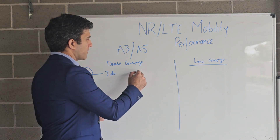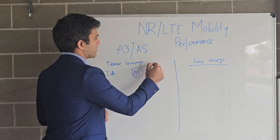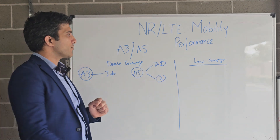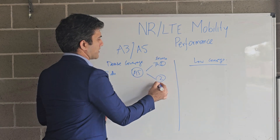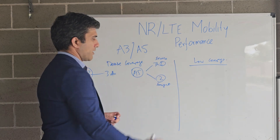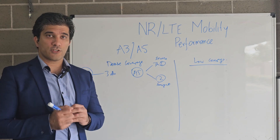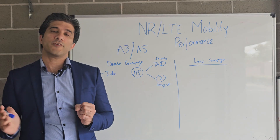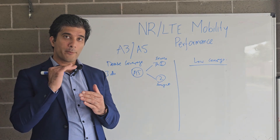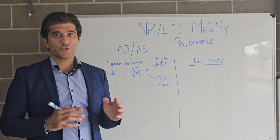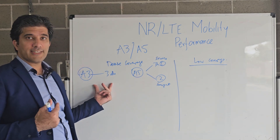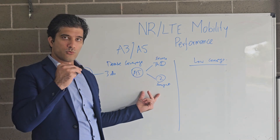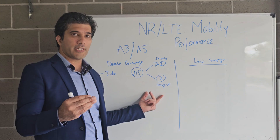For A5, we have two thresholds. The first one is for the source cell and the second is for the target. In A5, we look at whether the source has degraded worse than a particular threshold, but we also check the target — the target has to be better than its threshold. So the difference here is: in A3 you only look at a dB difference and hand over; in A5 you check that your source is worse but also that your target is good enough, then you hand over.